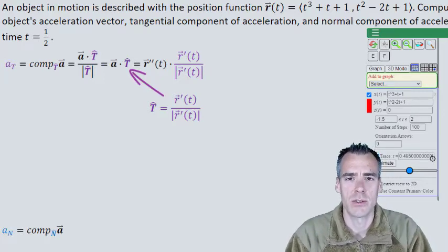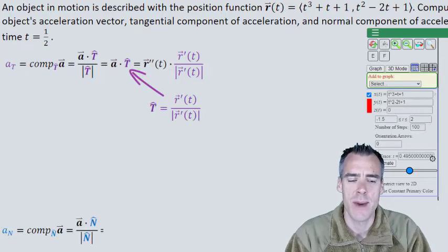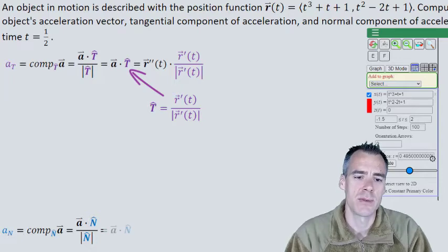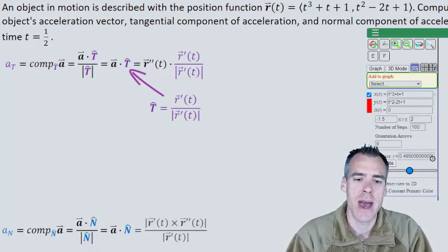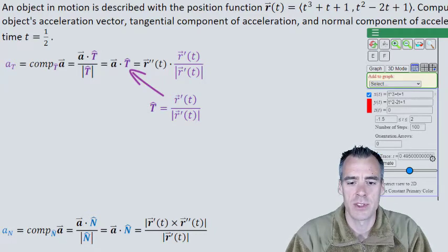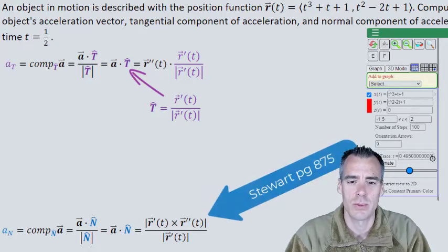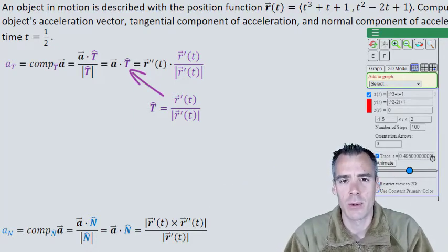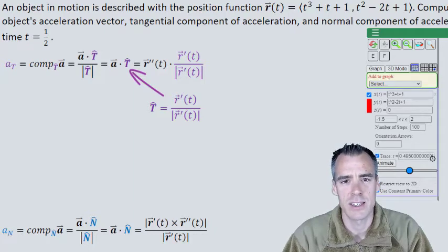Before we find those, let's look at our normal component of acceleration given by this equation from the last video. We can break that projection down into a·n̂ over the magnitude of n̂. The magnitude of n̂ is just one, so this becomes a·n̂. It turns out a·n will actually equate to this equation: the magnitude of r'(t) cross product with r''(t), all divided by the magnitude of r'(t). If you'd like to see where we get this from, look up the derivation in Stewart page 875. The cool thing about it is it's just going to rely on r' and r'' again, which we already wanted to find for the tangential acceleration component.